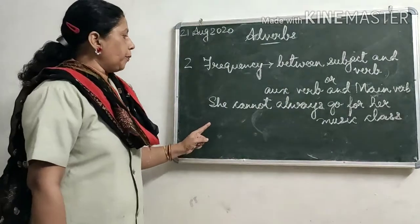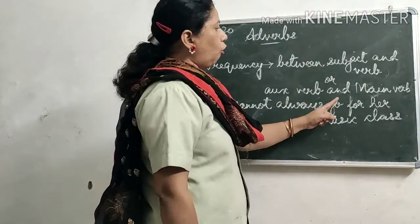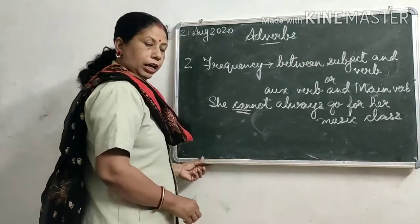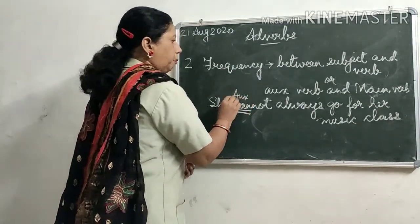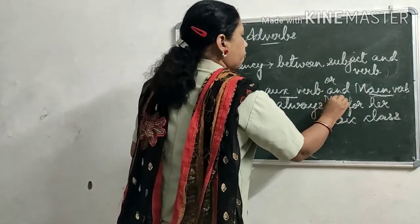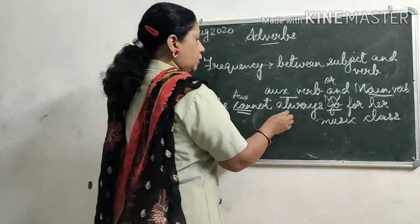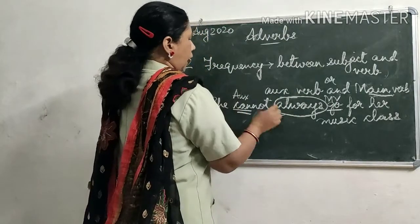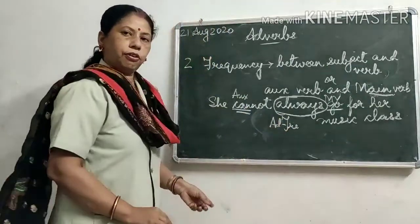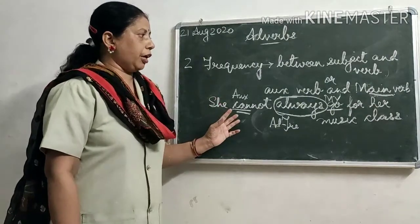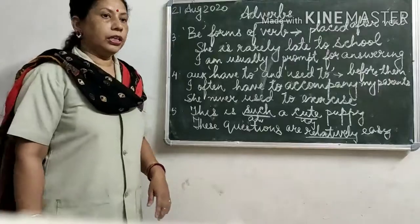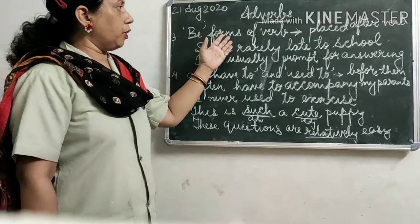Now let us see this in the sentence: 'She cannot always go for her music class.' Here 'can' is the auxiliary verb and 'go' is the main verb. The adverb of frequency 'always' is placed between the auxiliary verb and the main verb.